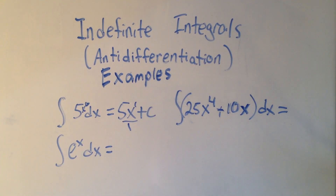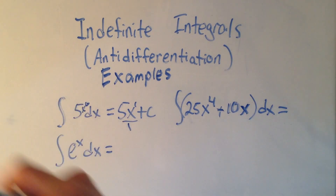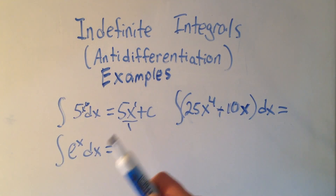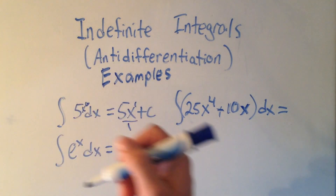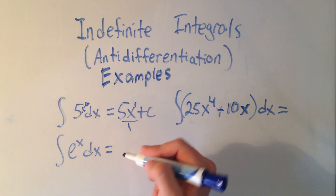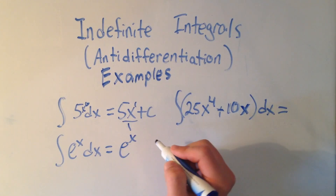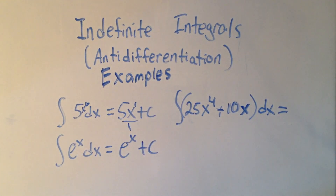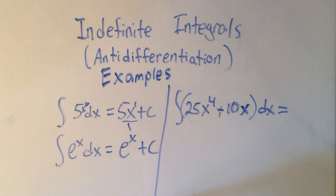The integral of e to the x dx. You have to recall that the derivative of e to the x is e to the x. So that means the integral of e to the x is e to the x — or the antiderivative of e to the x is e to the x. Plus c. Always plus c when we're doing indefinite integrals.